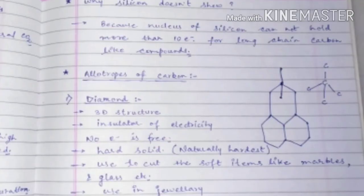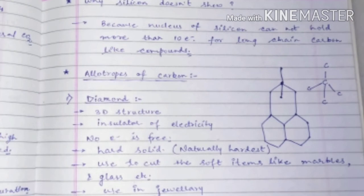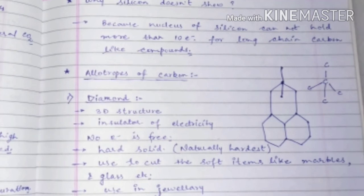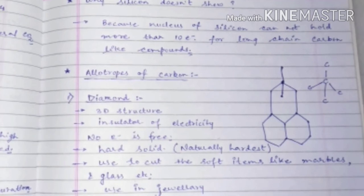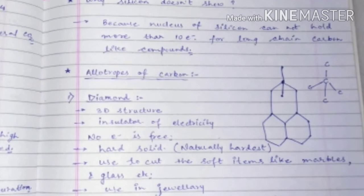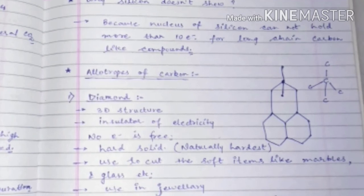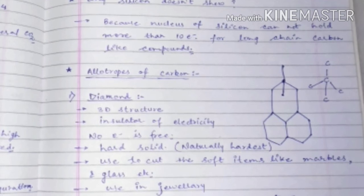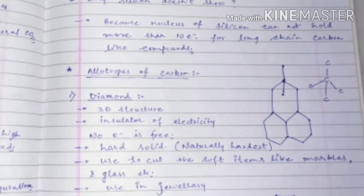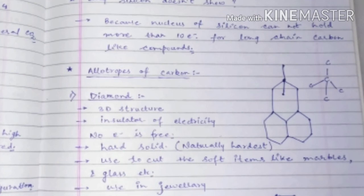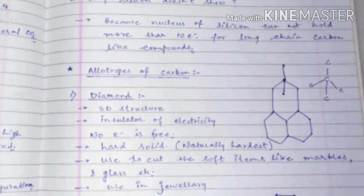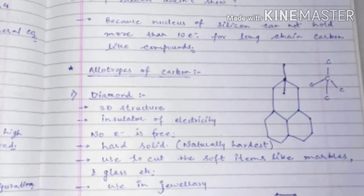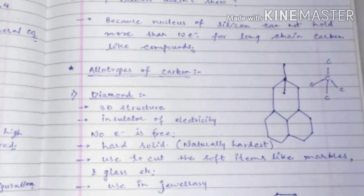Now we will discuss why silicon does not form long chain compounds like carbon. Silicon belongs to the same group as carbon and also has four electrons in its outer shell, so the valency of silicon is four. However, the nucleus of silicon cannot hold the electrons in a long chain compound. Silicon can form long chains, but only up to compounds containing five to seven atoms.